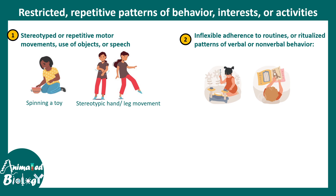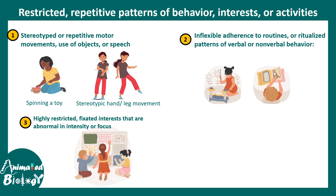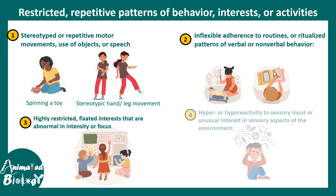Inflexible adherence to a routine or ritualistic pattern of behavior is also very typical of autistic children. For example, a child who likes to play the drum will do so at a specific time of day in a specific corner of the room, and this routine is followed meticulously every time. They also have highly fixed interests in a particular object and do not like to explore many things. Overall, they perceive the world in a different way compared to a typical child.